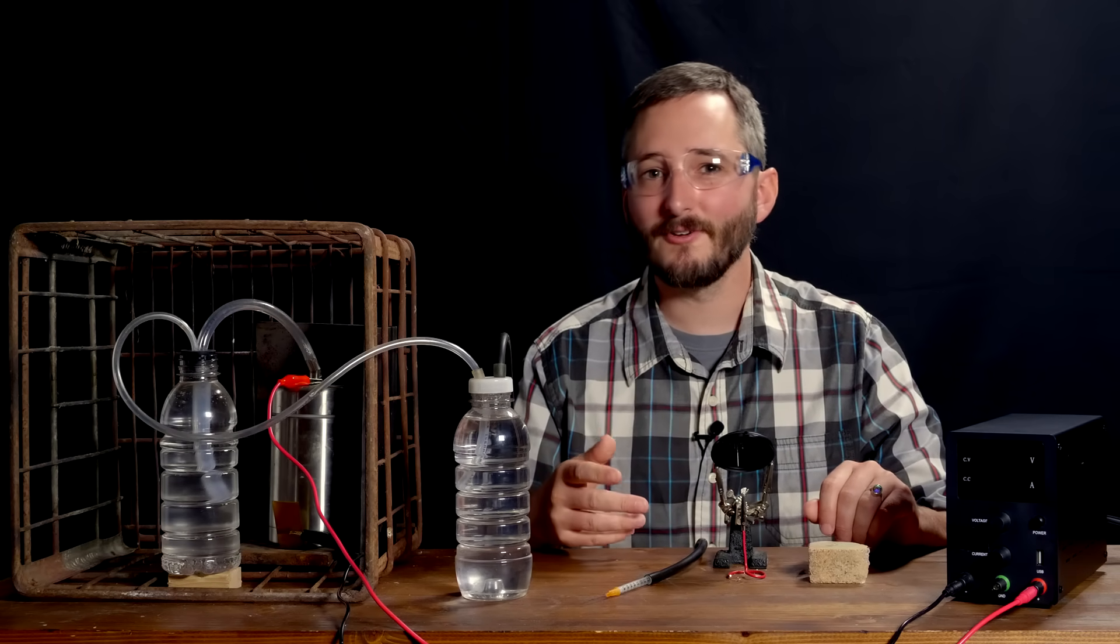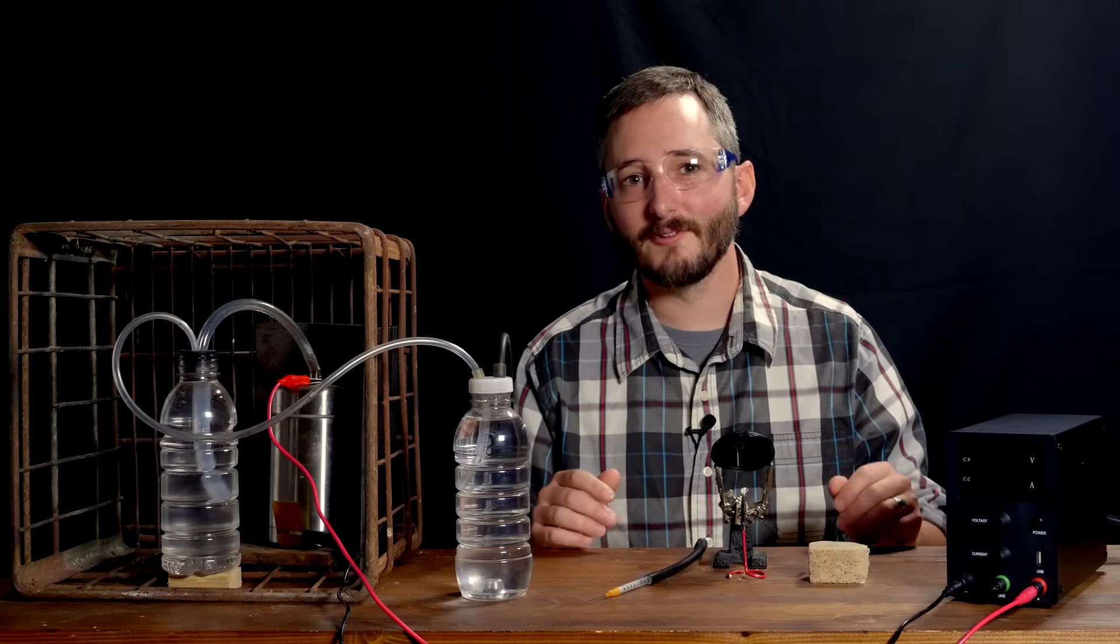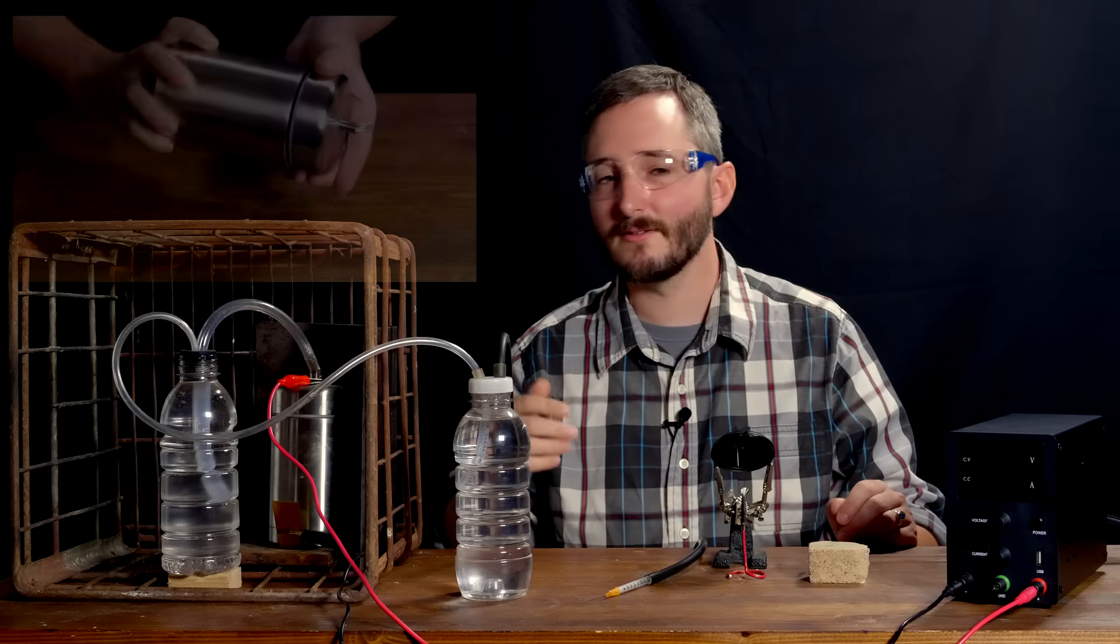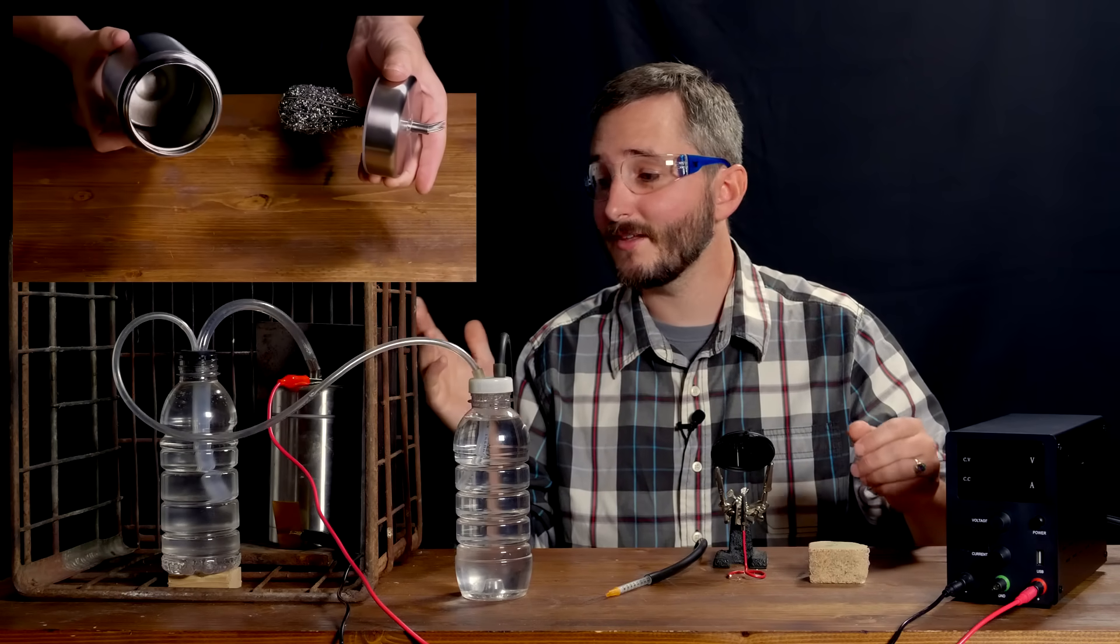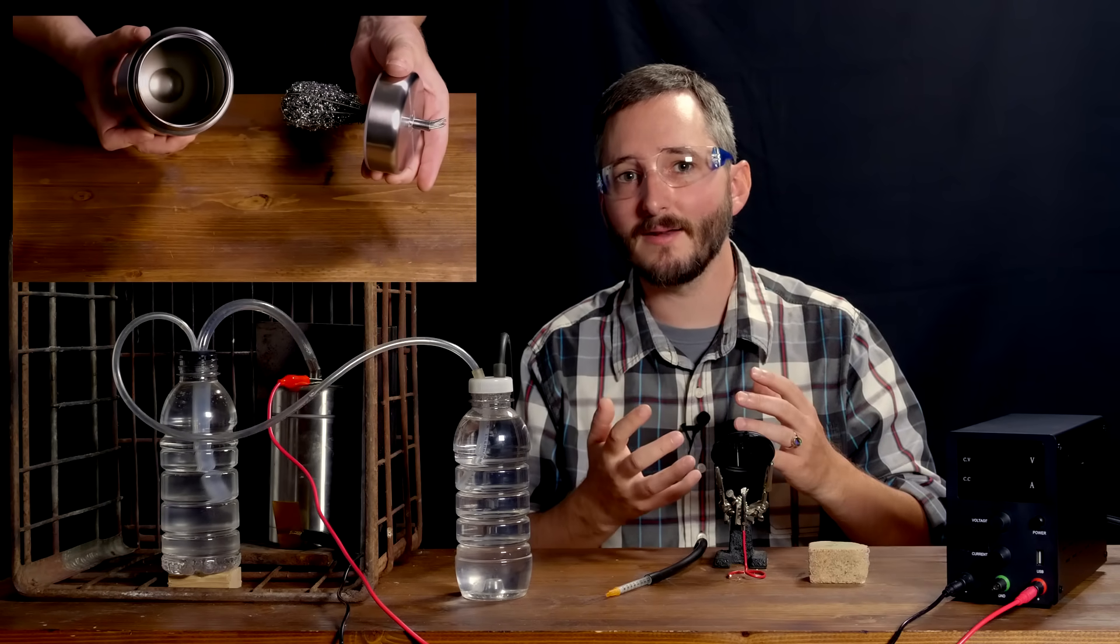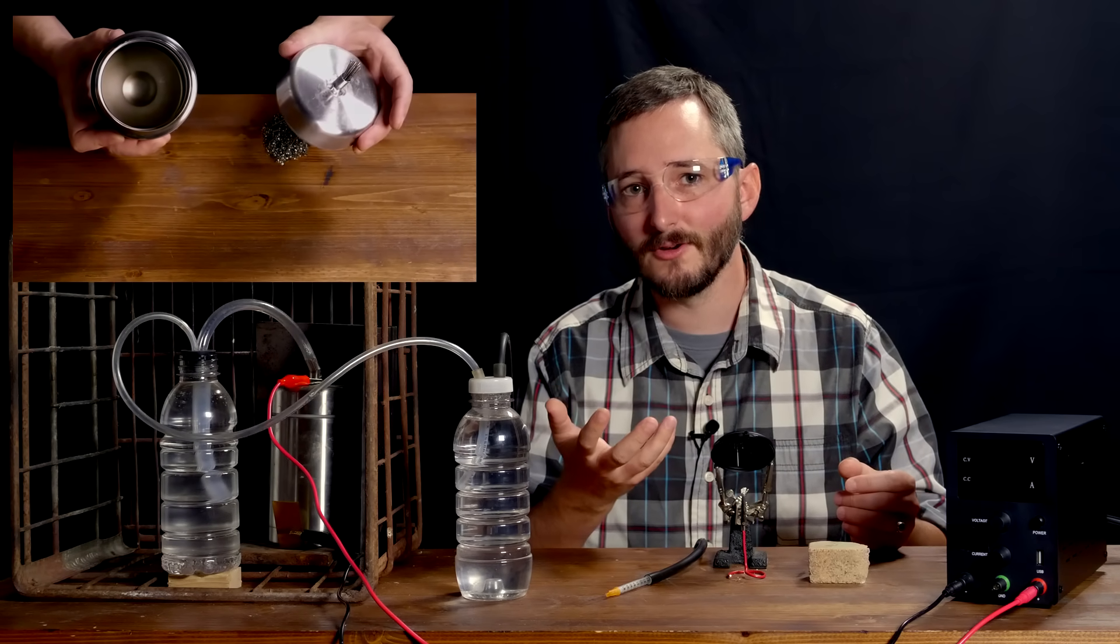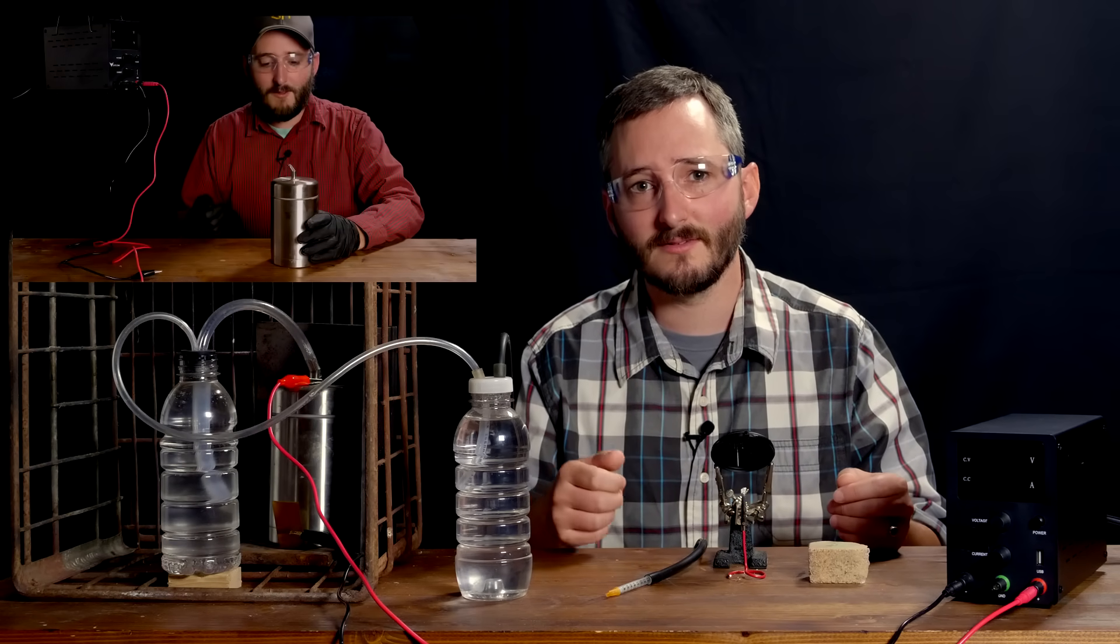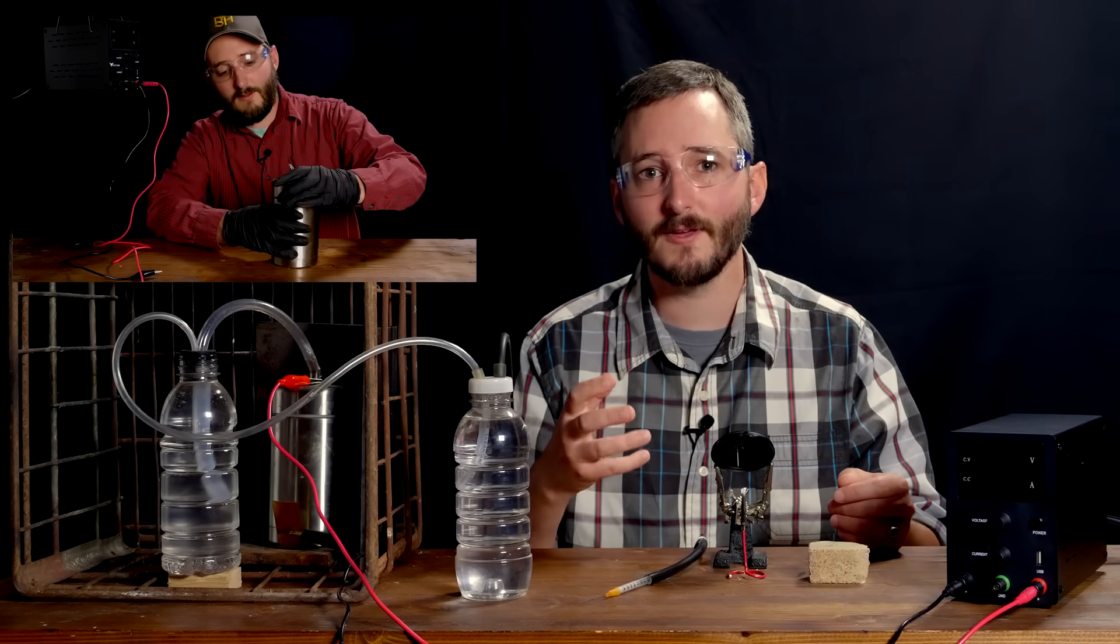So if you're coming from my earlier video on the subject of electrolysis, you'll recognize this as the first combined output electrolysis device that I made, using a stainless steel food container as the body, which doubles as the cathode or negative electrode, and a metal whisk packed with a stainless steel scouring pad as the positive anode.